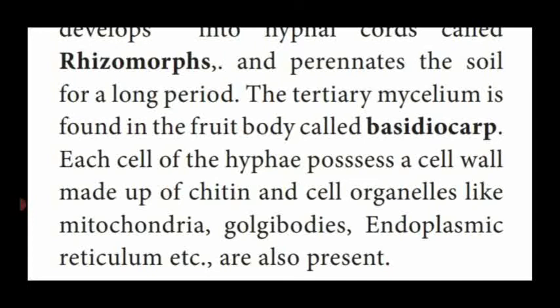At the time of the rainy season we can see an umbrella-shaped white organ named Agaricus — that is the fruiting body. This fruiting body contains tertiary mycelium or basidiocarp. Each cell of the hyphae possesses a cell wall made up of chitin, and cell organelles like mitochondria, Golgi bodies, and endoplasmic reticulum are present. So Agaricus fungi contains three types of mycelium: primary, secondary, and tertiary.